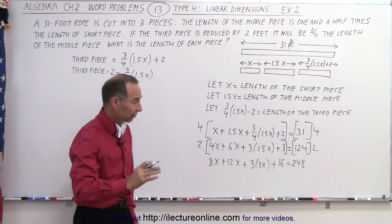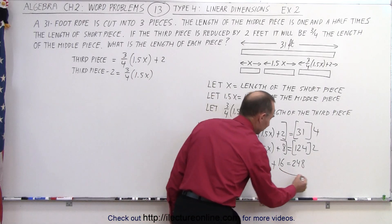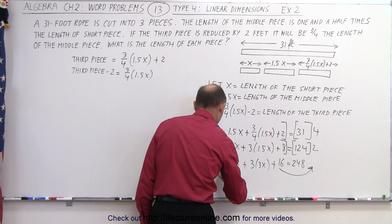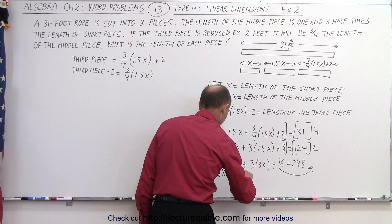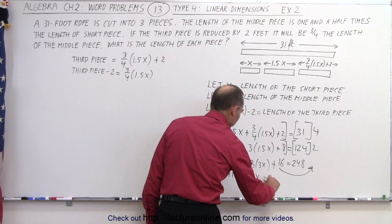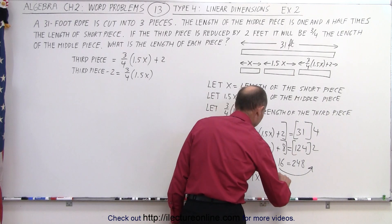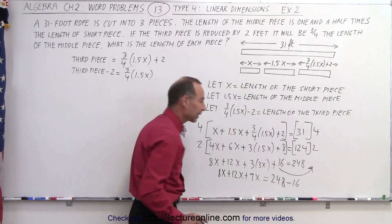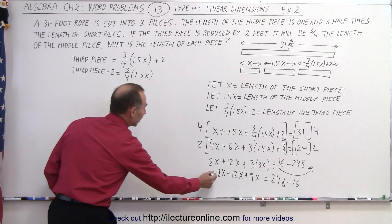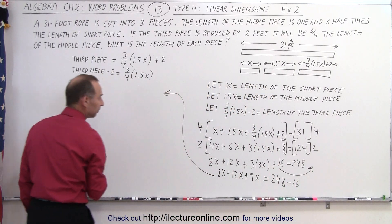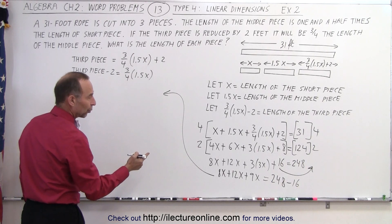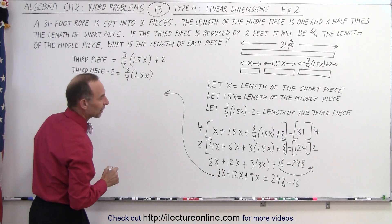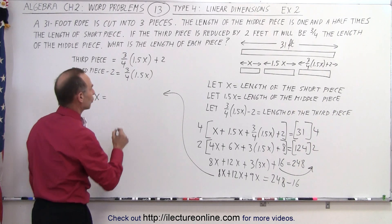Now we move all the X terms to one side and all the numbers to the other side, which means 16 needs to move over. That gives us 8X plus 12X plus 9X equals 248 minus 16. Combining like terms: 8 plus 12 is 20, plus 9 is 29X, equal to 248 minus 16, which is 232.